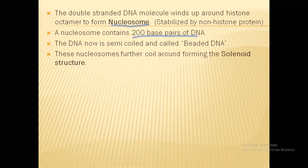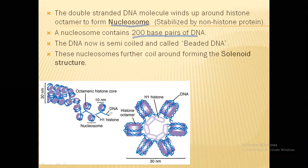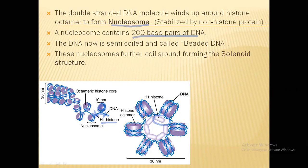The nucleosome further coils up to form solenoids. As seen in the diagram, the DNA winds around the histone octamer, covering 200 base pairs per nucleosome unit. The H1 histone protein stabilizes the nucleosome by blocking the entry/exit point, preventing it from opening up. Each unit is called a nucleosome, and these are visible as the beaded structure.